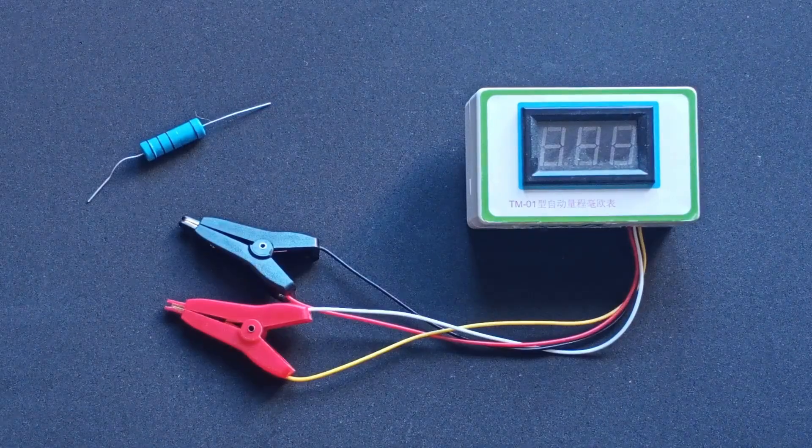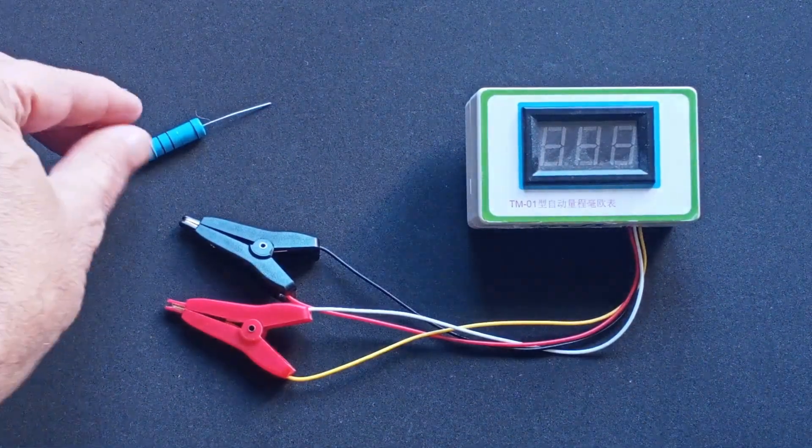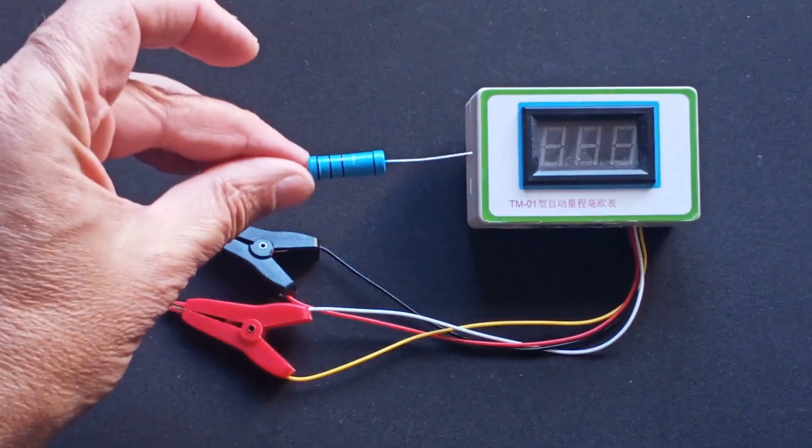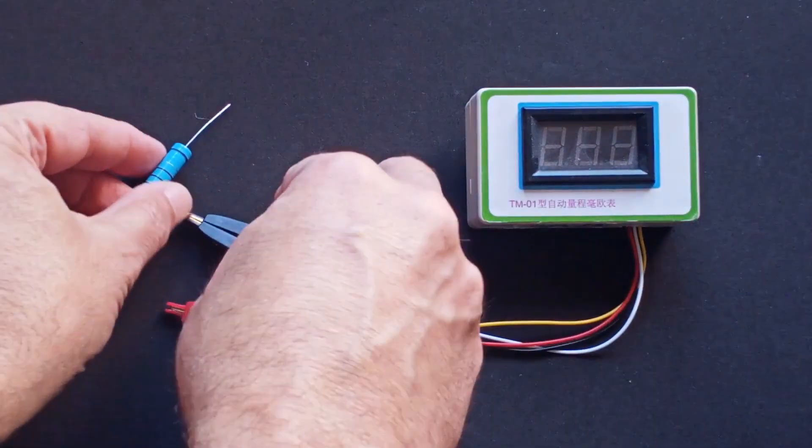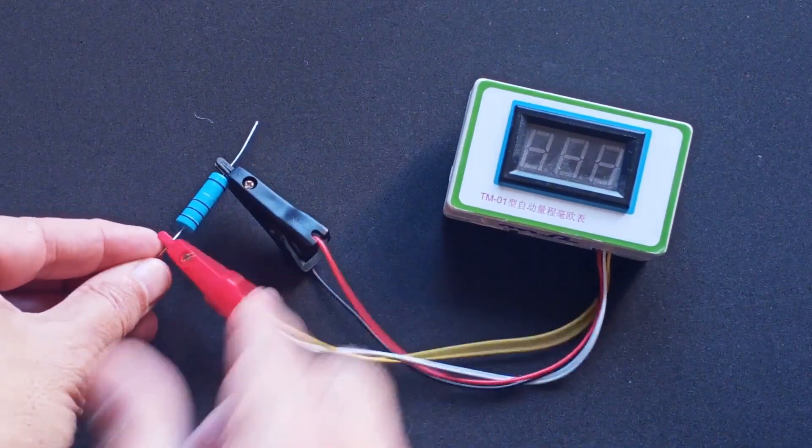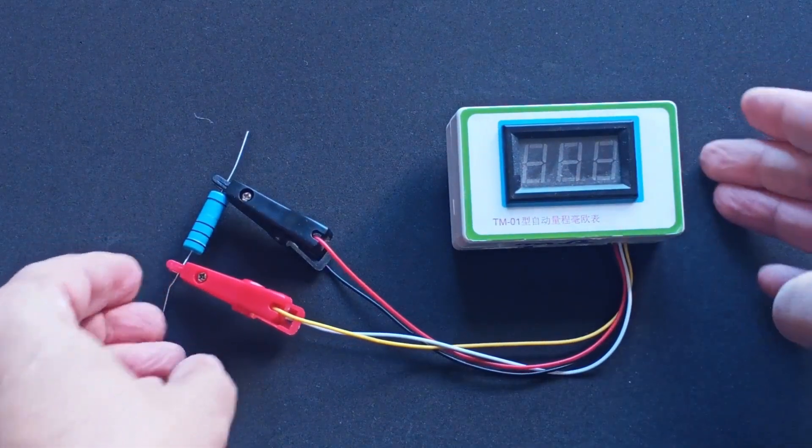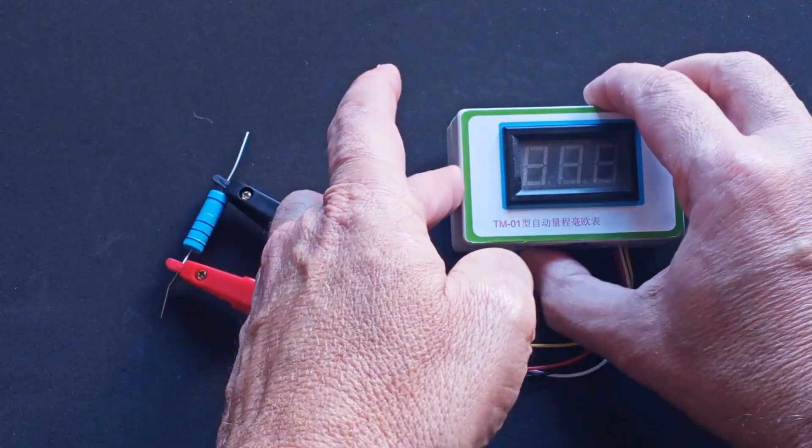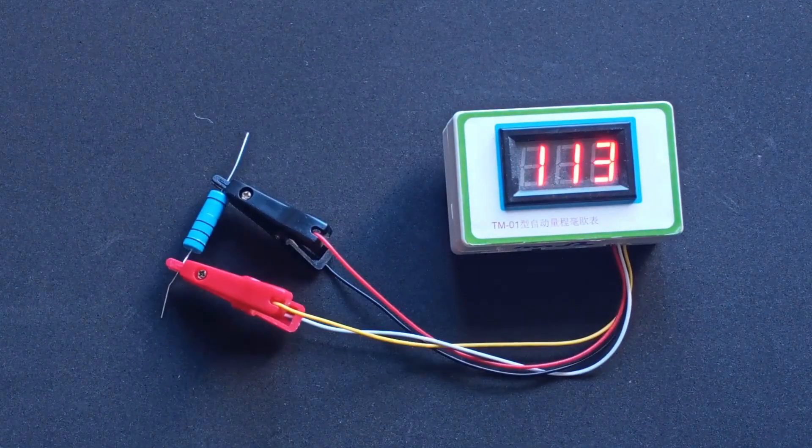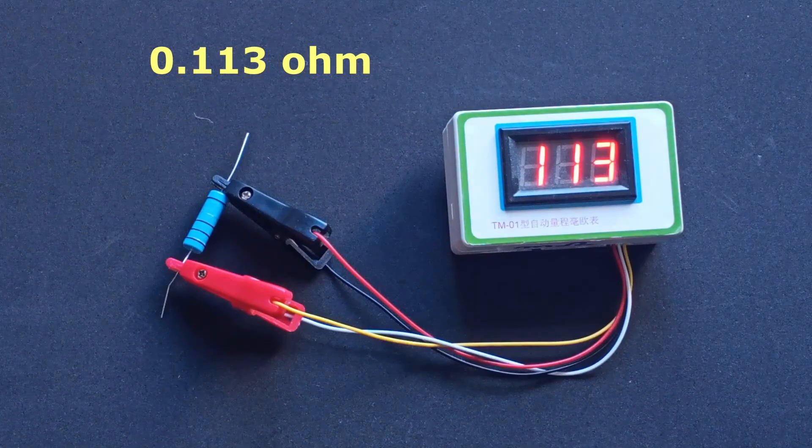We will follow the latter approach. A low value power resistor is required, in this case one with a nominal value of 0.12 ohms. Its resistance cannot be measured with a standard tester but requires a bridge milliohmmeter. Using this instrument, we measure the resistor's value, confirming it to be 113 milliohms or 0.113 ohms.